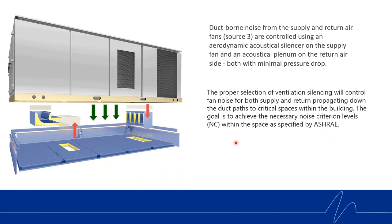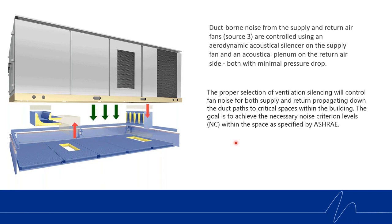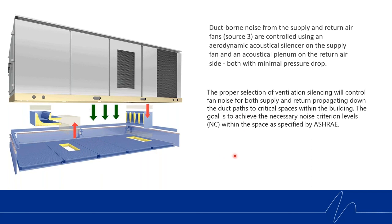For ductwork and duct-borne noise — source three — duct-borne noise from the supply and return air is controlled by using aerodynamic acoustical silencers on the supply fan and an acoustical plenum on the return air side. We try to fit those within the roof curb to make a compact unit of noise control, achieving that with minimal pressure drop. The proper selection of ventilation silencing will control fan noise for both supply and return, propagating down the duct paths to critical spaces within the building. The goal is to achieve the necessary noise criterion NC levels within the space as specified by ASHRAE. These silencers and plenums are often custom-designed based on project-specific location.